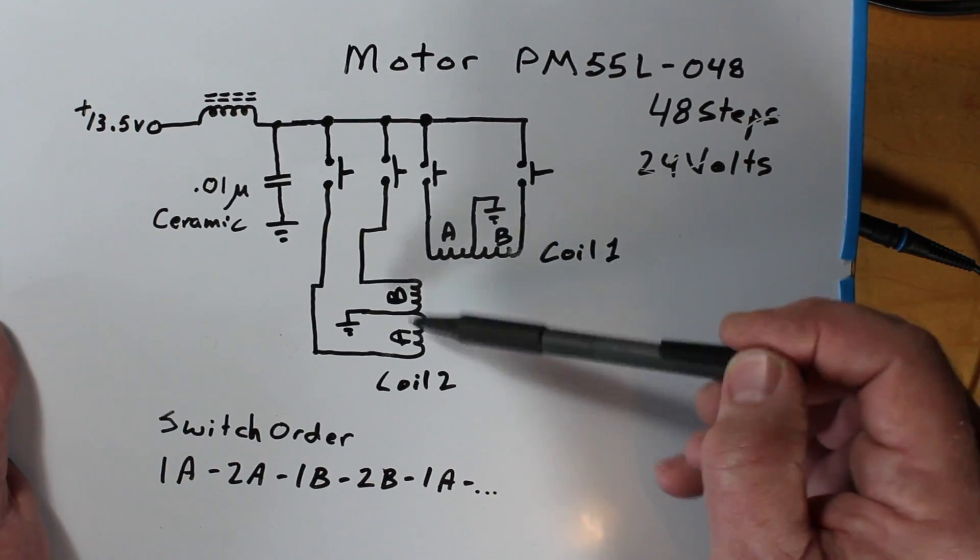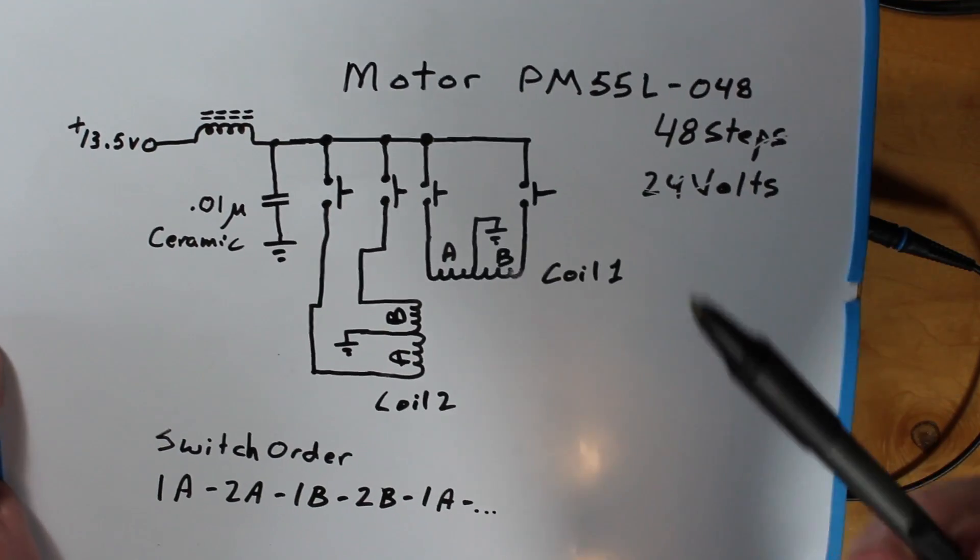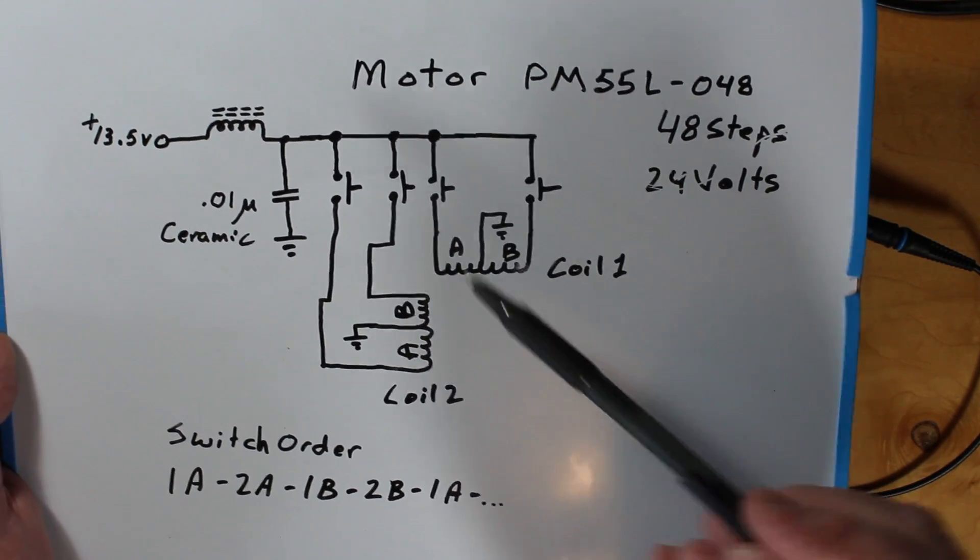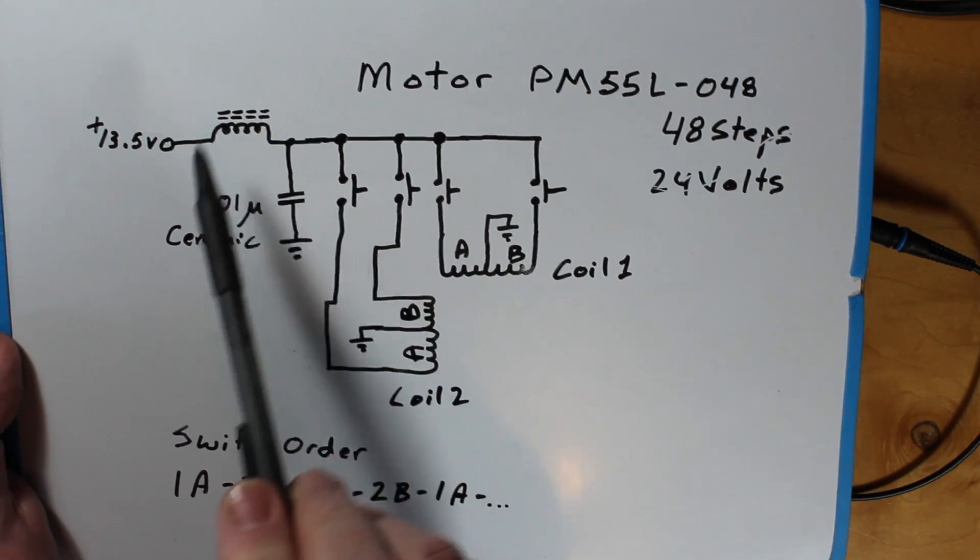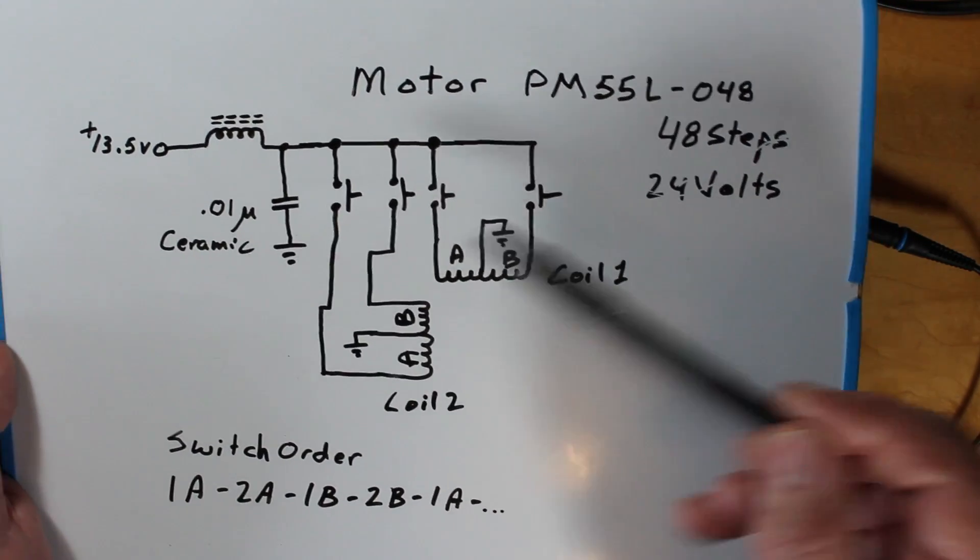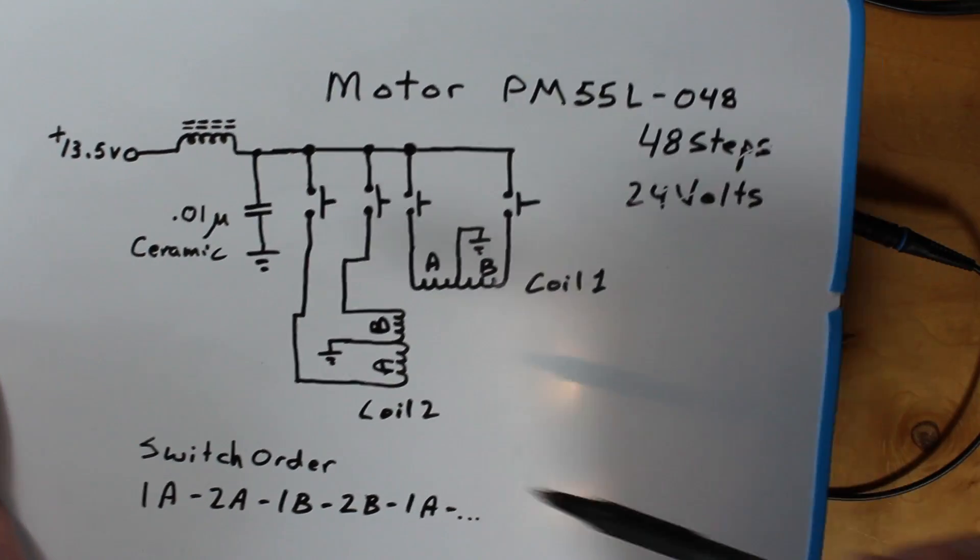It collapses and generates a fair spike and we'll show that on the oscilloscope later on. I'll tap it on this side and I'll put the other probe on this side and we'll see just how much junk comes out of this when you open these switches.